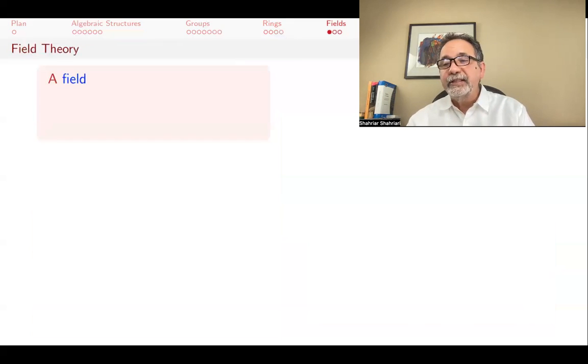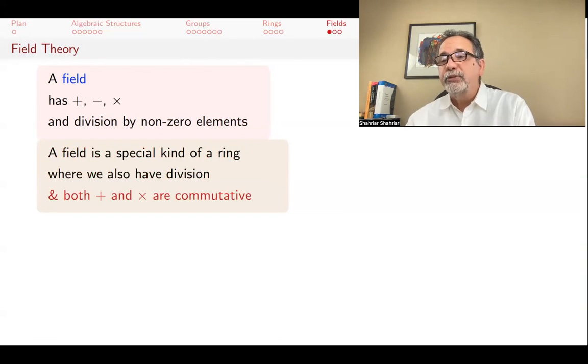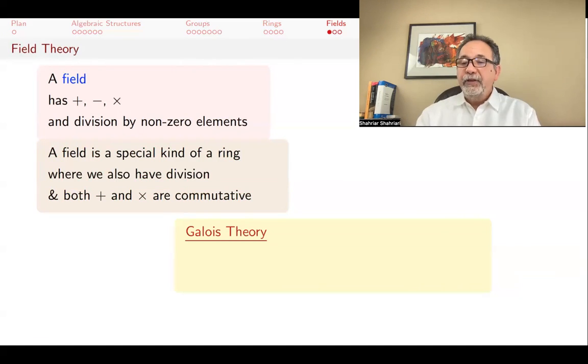Finally, let's talk about fields. A field is a set where you can do all four arithmetic operations. You can add, you can subtract, you can multiply, and you can divide, although divide only by non-zero elements. And the two operations, addition and multiplication, are commutative, meaning that a plus b equals b plus a, and a times b equals b times a. At the heart of studying fields is something called Galois theory that connects the study of fields to groups. This will be a subject of a series of future lectures.